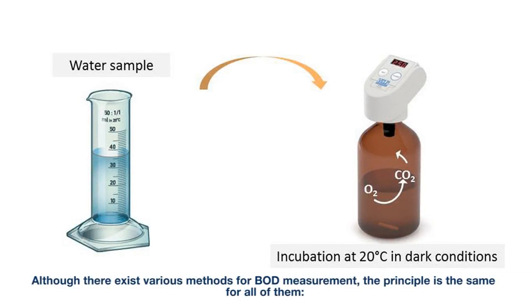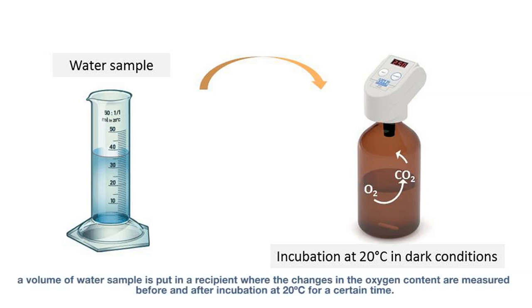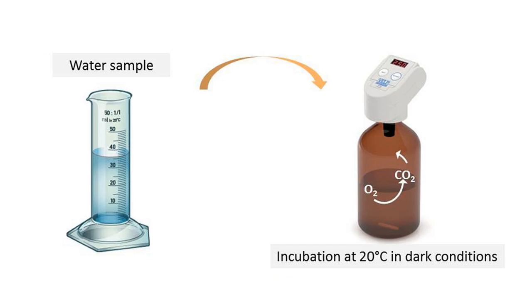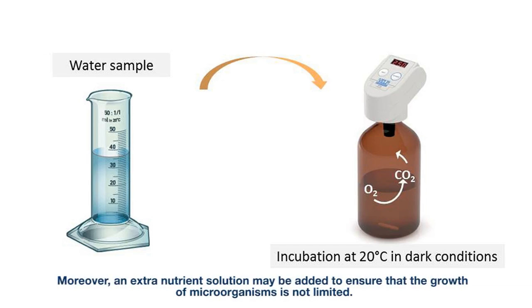Although there exist various methods for BOD measurement, the principle is the same for all of them. A volume of water sample is put in a recipient where the changes in the oxygen content are measured before and after incubation at 20 degrees for a certain time. If the sample is expected to have a low content of microorganisms, an inoculum should be added. Moreover, an extra nutrient solution may be added to ensure that the growth of microorganisms is not limited.